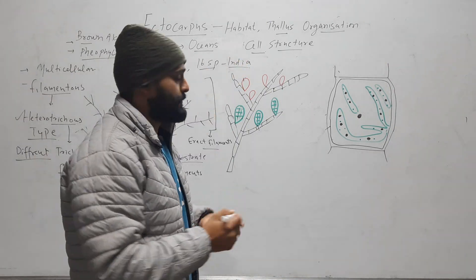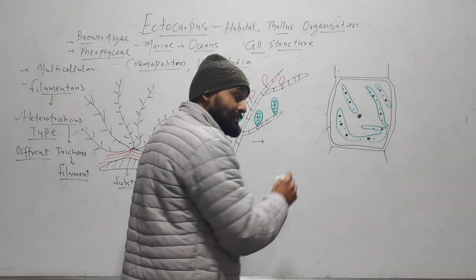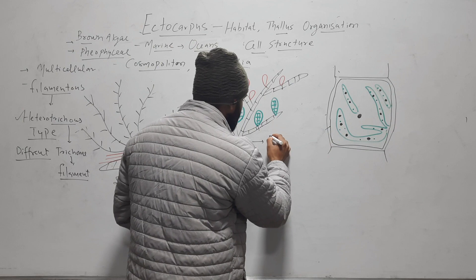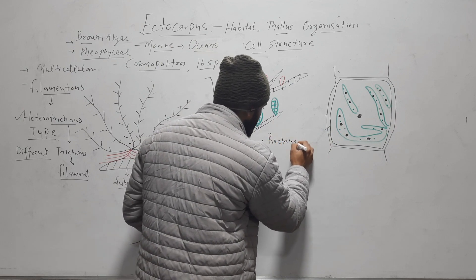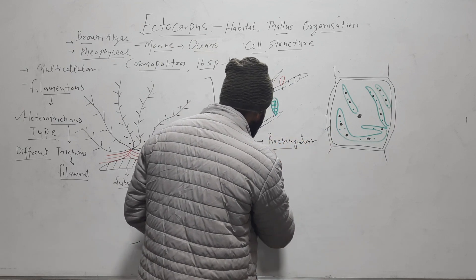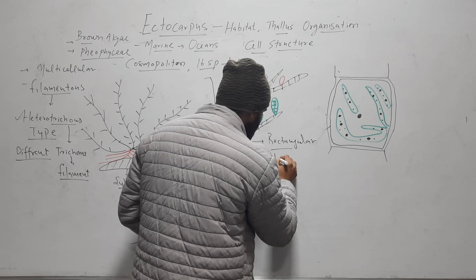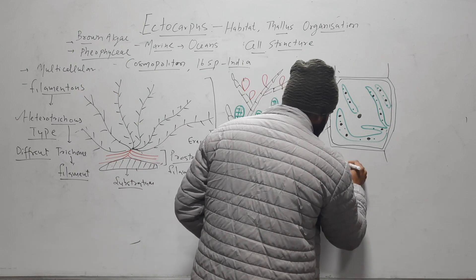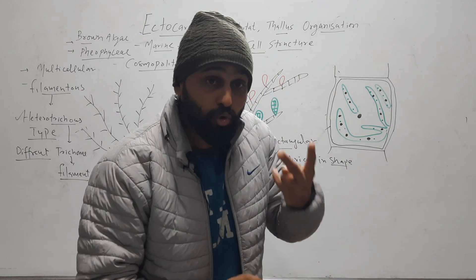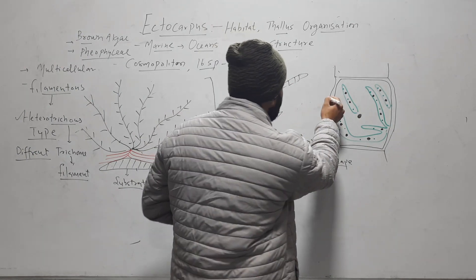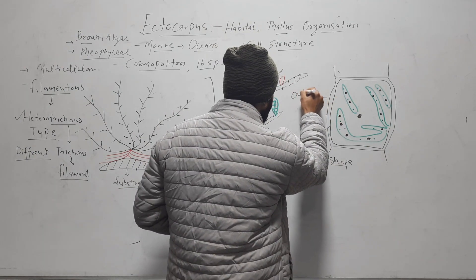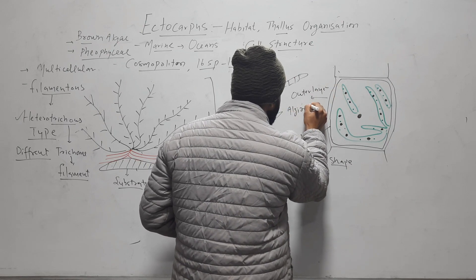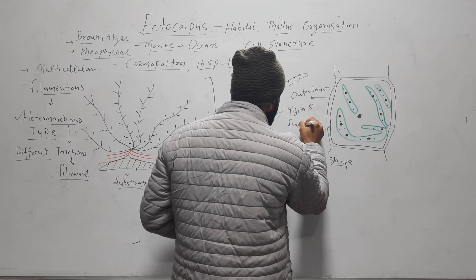Now coming to the cell structure. The cell of the filaments of Ectocarpus is rectangular or cylindrical in shape. And its cell wall has two different layers. Outer layer that is made up of algin and fucoidin.